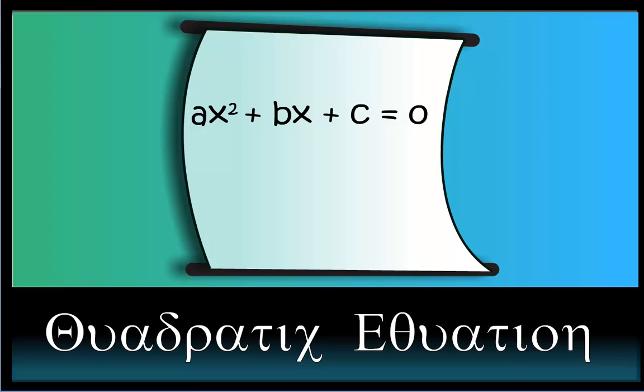ax² plus bx plus c equals zero. A quadratic equation in x is of the form ax² plus bx plus c equals zero for real numbers a, b, and c. This form is called the standard form of a quadratic equation.